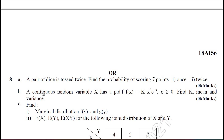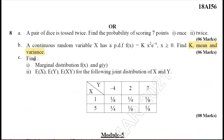Question 8B is on random variable. They have given a PDF: f(x) = k·x²·eˣ. You are required to find the value of k, and then find the mean and variance for the given function f(x). Question 8C is on a probability distribution table. You are required to find the marginal distributions of f(x) and f(y). You can find f(x) at the extreme corners and f(y) at the bottom. Then find the expectation of x, expectation of y, and expectation of xy.